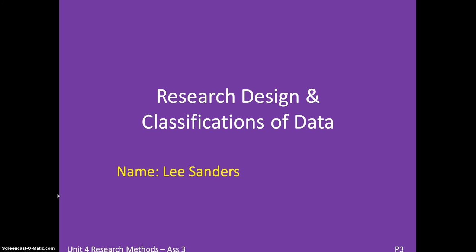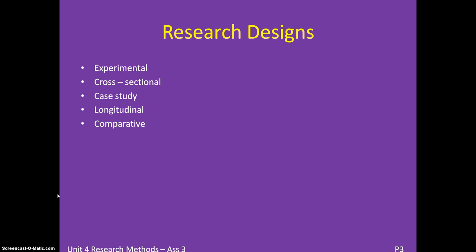There are five different research designs. The first is Experimental Research, which is when you measure how one variable affects another — specifically the independent affecting the dependent variable. There is Cross-Sectional, which is when you gather a range of participants' opinions, such as through a questionnaire. A Case Study investigates a specific individual or team over a large period of time — for example, measuring the psychological effects of an injury at different stages of recovery and rehabilitation.